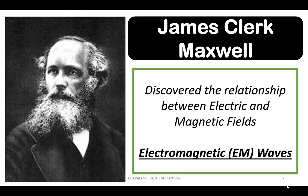James Clerk Maxwell was a Scottish scientist in the field of mathematical physics. His most notable achievement was to formulate the classical theory of electromagnetic radiation. He brought together for the first time electricity, magnetism, and light as different manifestations of the same phenomenon — electromagnetic waves.